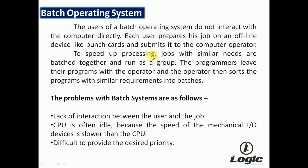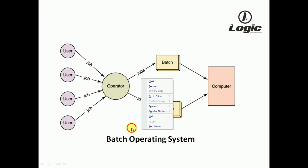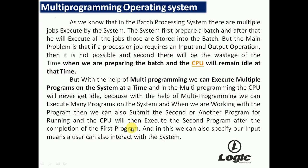The programmer leaves their programs with the operator, and the operator sorts programs with similar requirements into batches. In the diagram, a number of users pass jobs to the operator, related jobs are bunched together, and then passed to the computer. This is the batch operating system.